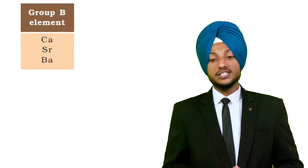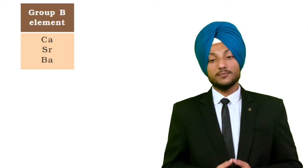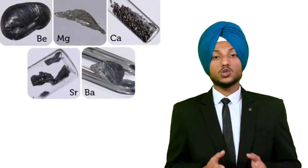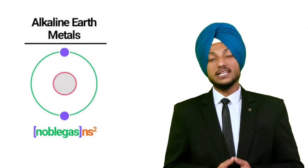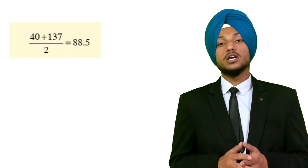Now let's look at the alkaline earth metal group. The elements calcium, strontium, and barium have similar chemical properties and form a triad. For example, all of these elements are metals, the oxides of all of them are alkaline in nature, and all of these elements have a valency of two — they are called divalent. The atomic mass of calcium is 40 and the atomic mass of barium is 137. The arithmetic mean is (40 + 137) / 2 = 177 / 2 = 88.5.